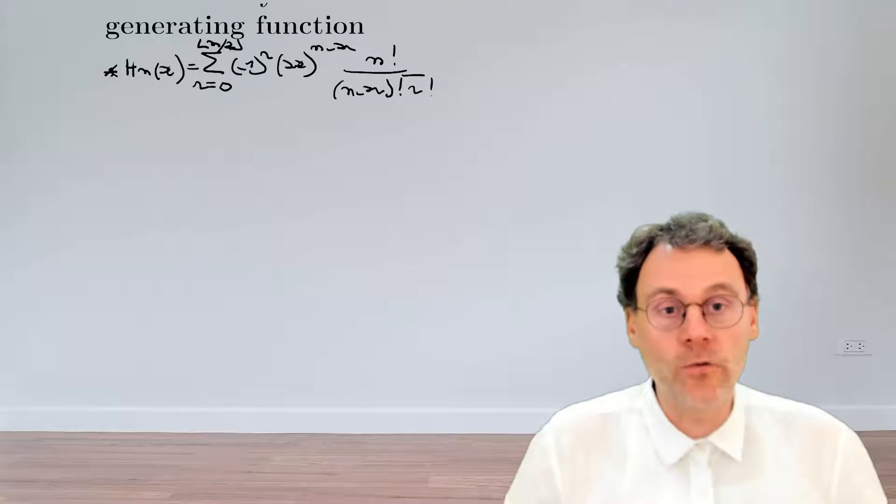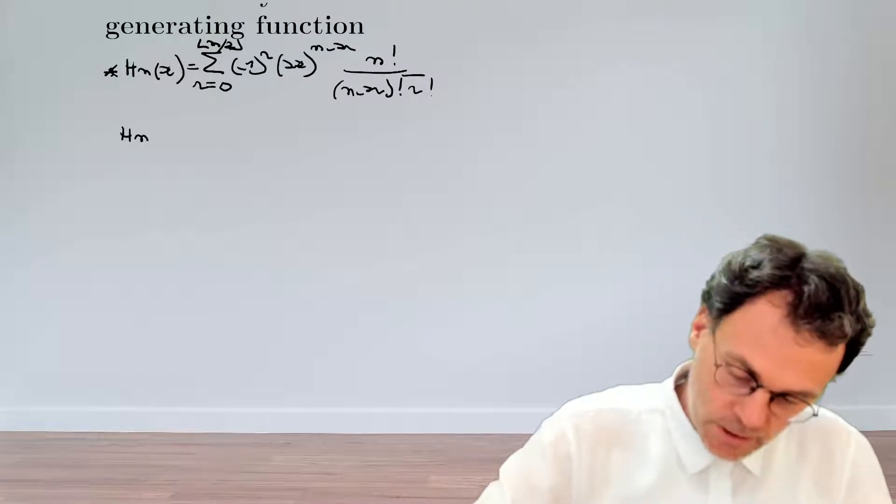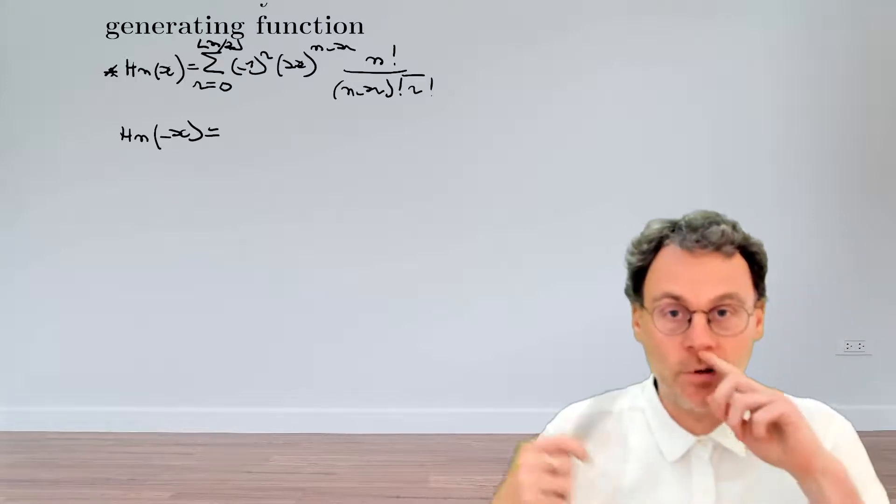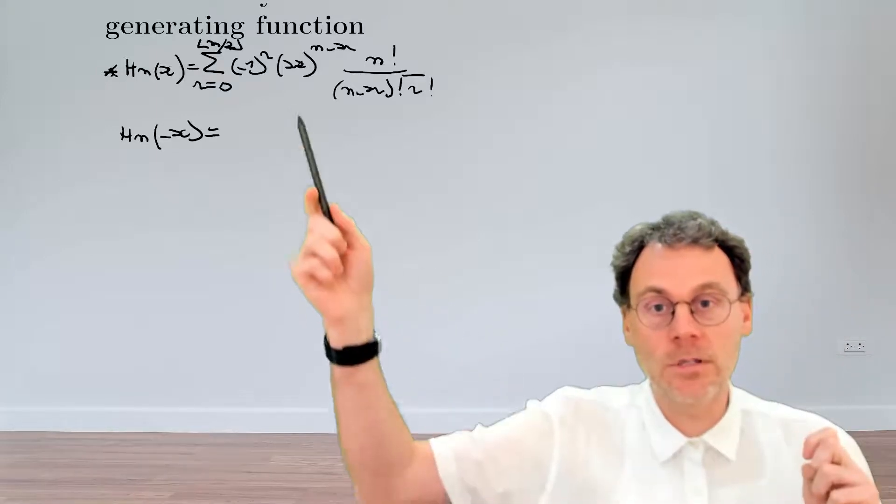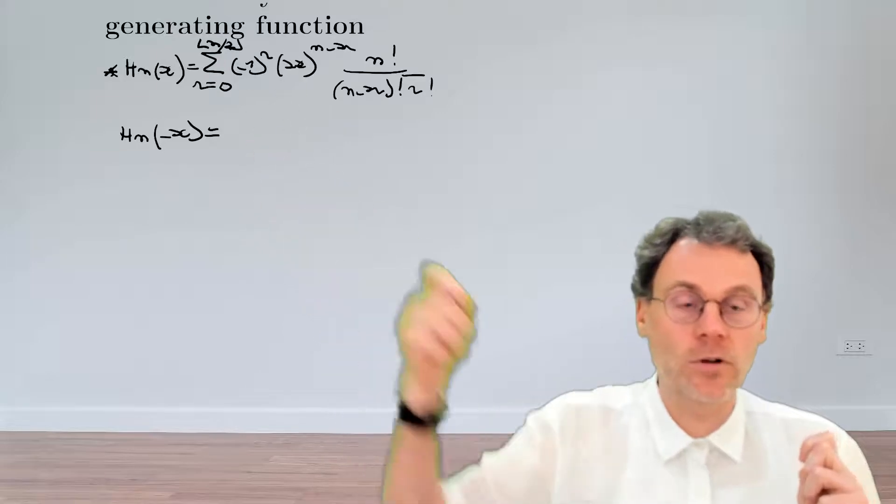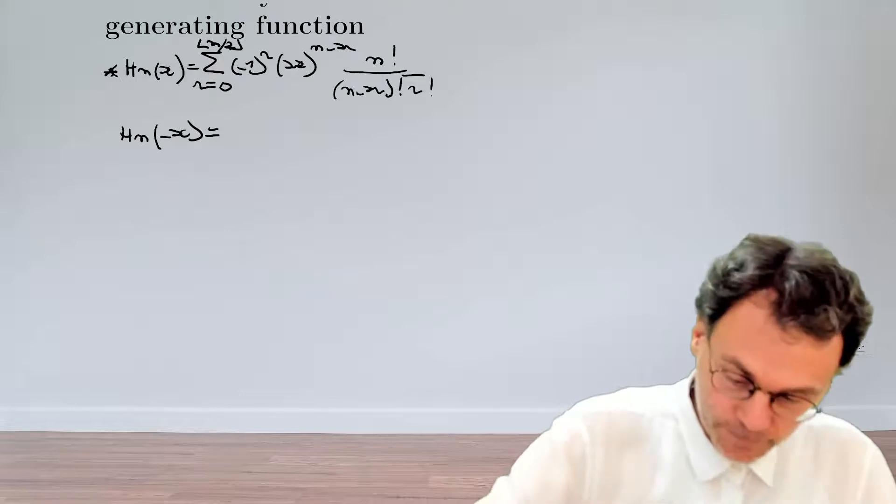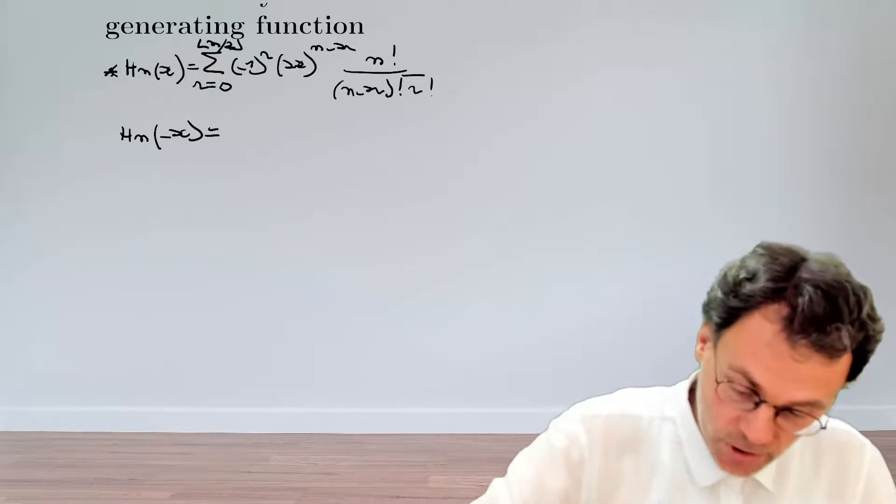So if we replace here x by minus x, then it's pretty easy to see what happens. The only thing that happens is in this factor here, you pick up an extra minus 1 to the power of n minus 2r. But apart from that, everything just stays the same.